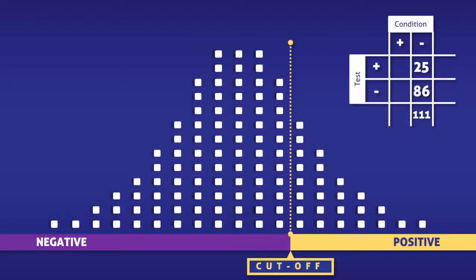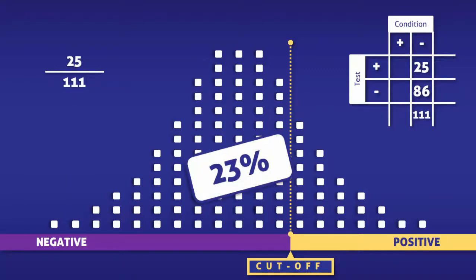Now all we have to do is enter the information into the equation. In doing so, we find that the false positive rate is 25 over 111, which is 23 percent.